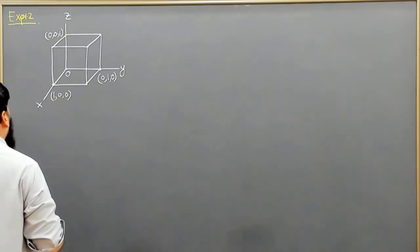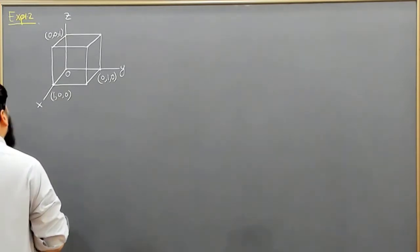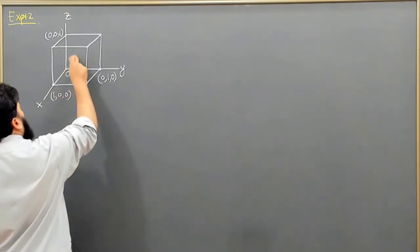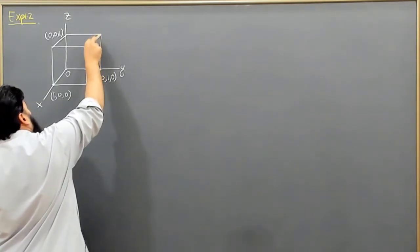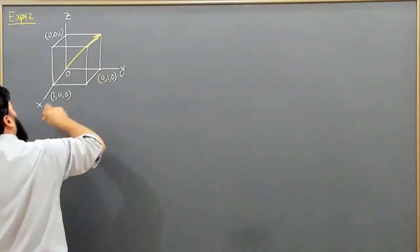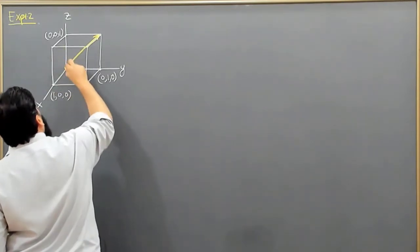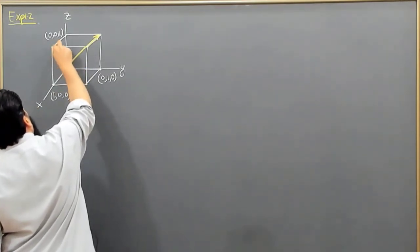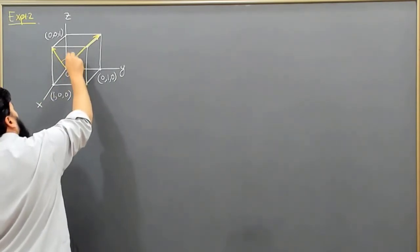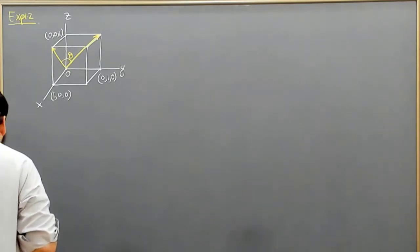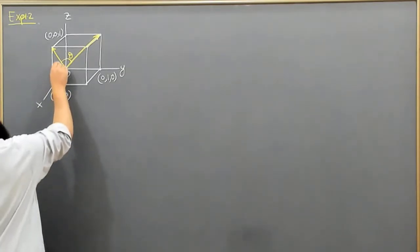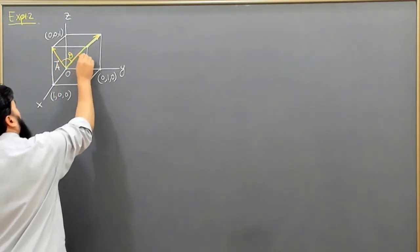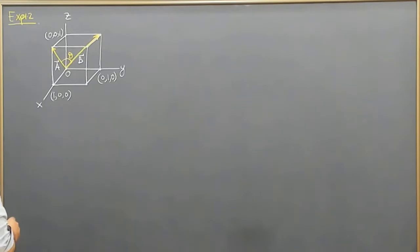Now we consider two face diagonals. One face diagonal is on the xz-plane face, and the other is in the yz-plane. We need to find the angle theta between them. Let us call this vector A in the xz-plane and vector B in the yz-plane, and we will find the angle between the two.